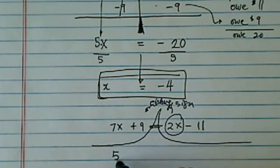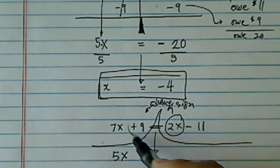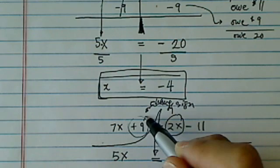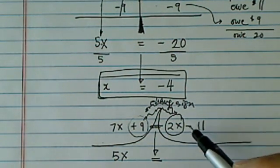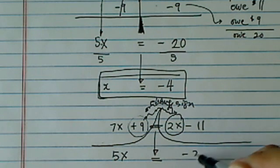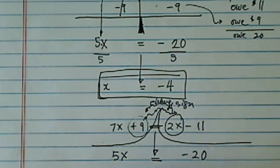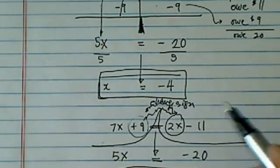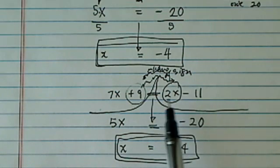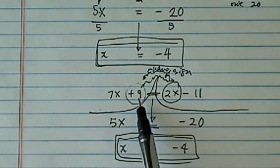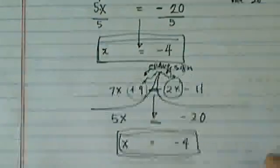7X minus 2X becomes 5X. The equal sign doesn't change, and do the same thing with this one. This is plus 9, I'm going to carry it over the mountain, and it's going to become minus 9. Minus 11 minus 9 is minus 20, divided by 5 on both sides, I have X equal to minus 4. Either way, the second is a little more advanced, but it doesn't have to scare anybody. You move this thing over, change sign, so you do the same thing for plus 9. You move over, you change the sign. X equal to minus 4.